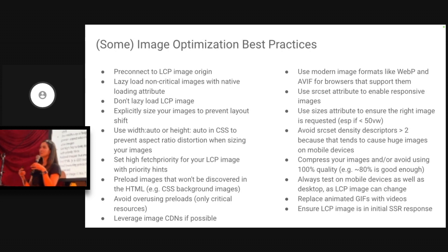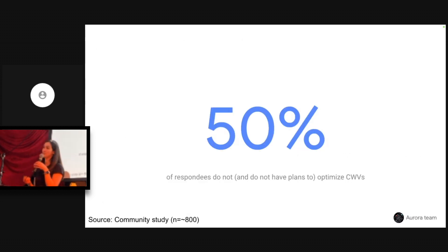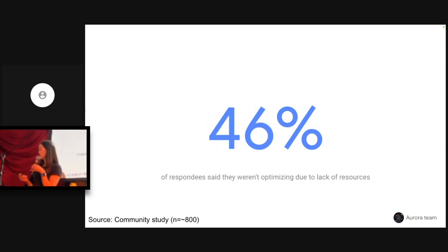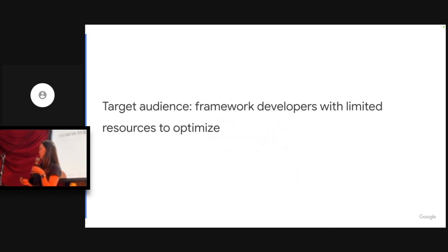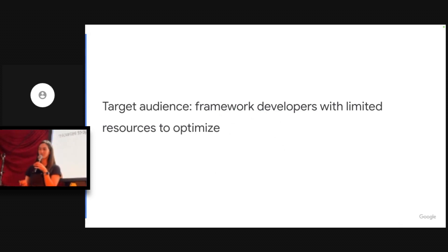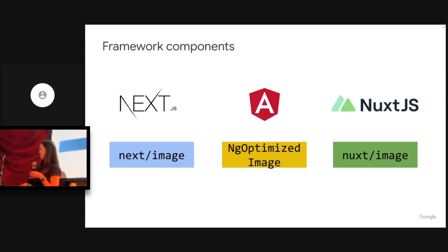In addition to having the expertise, another obstacle can be resources. In a recent community survey that Chrome conducted, half of respondents said they don't optimize for Core Vitals and don't have any plans to anytime soon. The top reason by far was lack of resources. And that's really our target audience — framework developers who don't have the resources to take the time to optimize themselves. That's where framework components really shine.